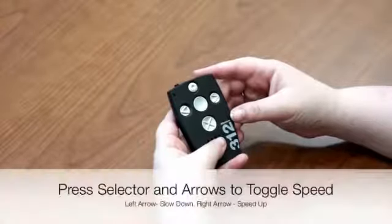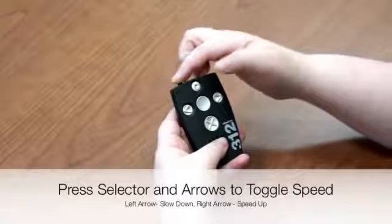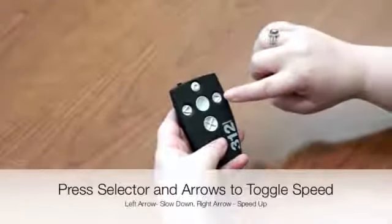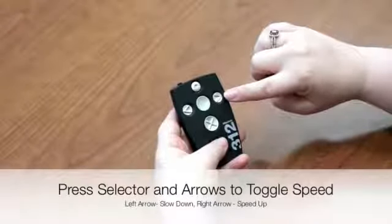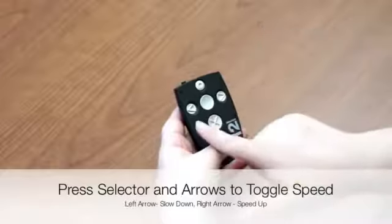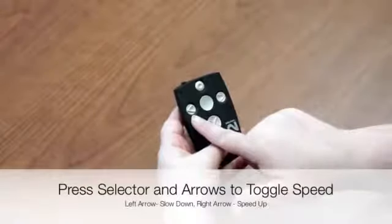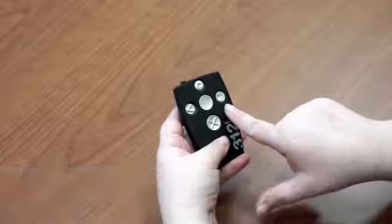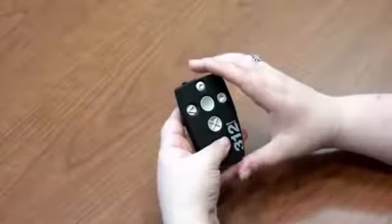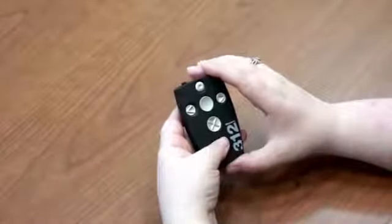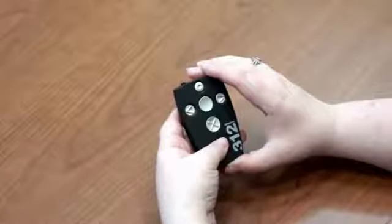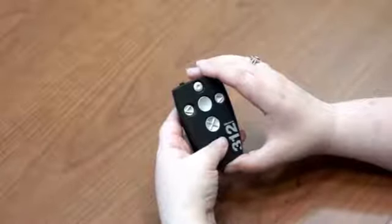During playback, you can use the selector button with the arrow button to change the speed of the playback. To slow it down, press the left button. To speed up, press the right. Each press of the button changes the speed level by 10%. You can increase the speed from 50% to 200%.